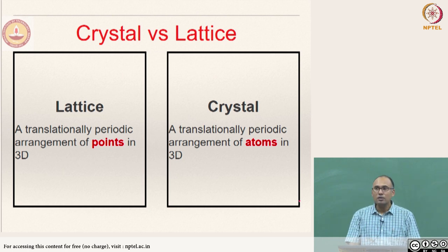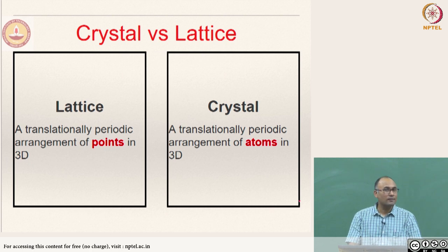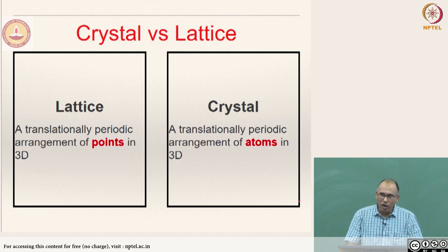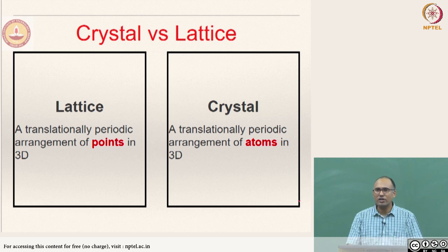What is a crystal? When defining a lattice, we only said 'points' — a periodic arrangement of points. These points can actually be occupied by some real stuff. If they are occupied by atoms, ions, or molecules, then that becomes a crystal. A translationally periodic arrangement of atoms in 3D is what is called a crystal.